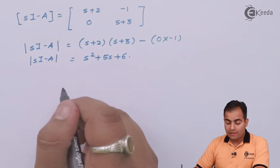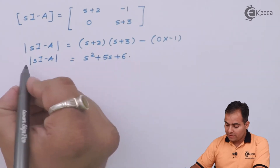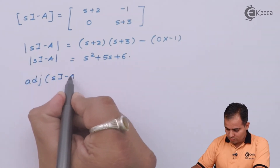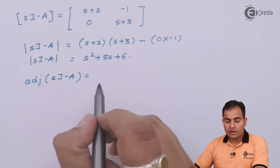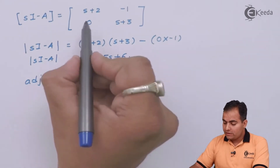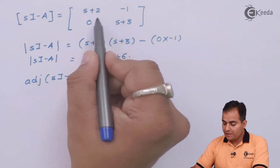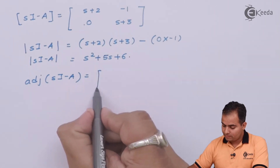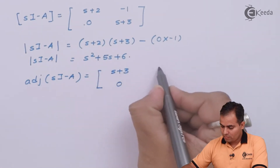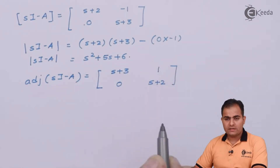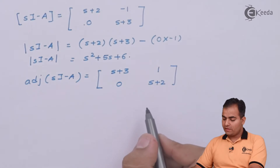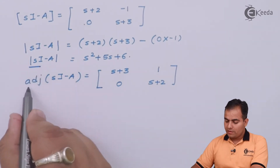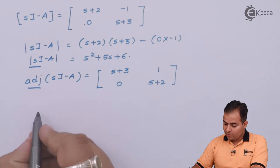Now we find the adjoint of (sI minus A). Using the shortcut method: swap the two diagonal values and multiply minus sign with the two off-diagonal elements. We then substitute both the determinant and adjoint into the (sI minus A) inverse formula.